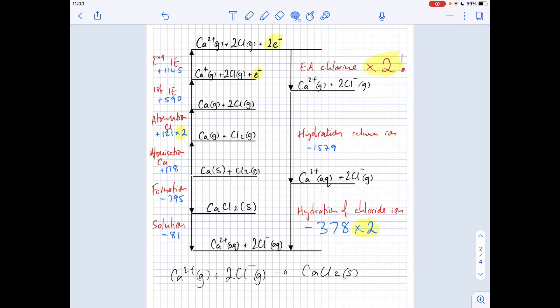OK. So moving on to the last part of the question. It says we can use the cycle to calculate the value for the lattice enthalpy for calcium chloride. So you'll notice I've written up the equation there that represents that process. So the lattice enthalpy is the enthalpy change when one mole of a solid ionic lattice is formed from its gaseous ions. So you can see there's a way of doing that or getting from gaseous ions to the solid lattice on this cycle.